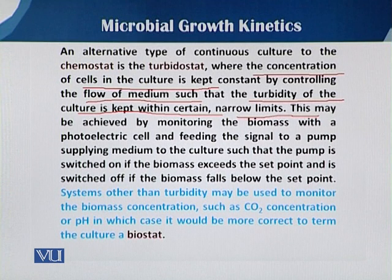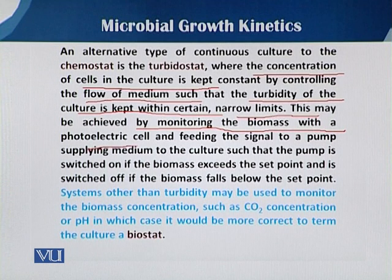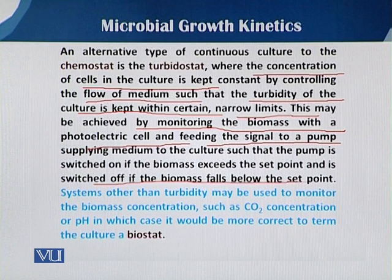Sometimes substrate utilization and cell mass increase occur simultaneously: substrate depletion reduces turbidity, while cell growth increases it. Medium color due to substrate concentration can also affect turbidity. This is achieved by monitoring biomass with photoelectric cells and feeding the signal to a pump. When turbidity changes, the signal automatically controls the flow rate — less turbidity decreases dilution. The turbidostat state is achieved when flow rate is controlled by the turbidity meter attached to photoelectric cells.